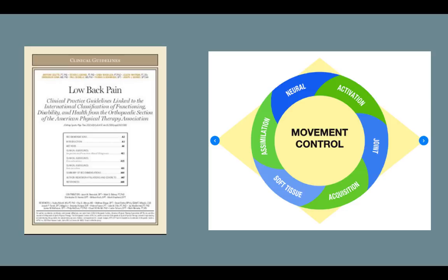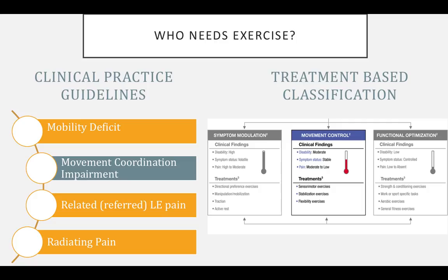So who needs exercise? If we give the right exercise to the right people at the right time, we may see better outcomes. We have the clinical practice guidelines written recently in 2018, and a fantastic editorial written in 2018 to guide us. According to our clinical practice guidelines, patients under the categories of mobility deficit, movement coordination impairment, related or referred lower extremity pain, and radiating pain would benefit from exercise. Those that fall under the movement control impairment will have exercise as their primary intervention, whereas the others may have exercise as secondary or tertiary. Those patients that fall under the movement control category may report recurring low back pain, have a presence of aberrant movements, pain during initiation or mid-range movements, and or have pain with provocation of involved lumbar segments.